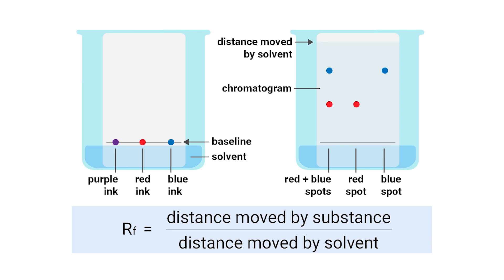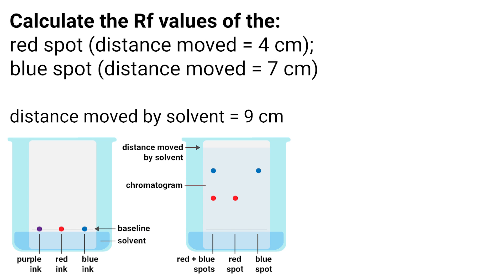You need to be able to calculate an Rf value of any spot on a chromatogram. The way that we calculate an Rf value is by taking the distance that a spot has moved and dividing it by the distance that the solvent moved in our experiment. This number will always be less than one because it's a ratio between how far something has moved versus how far the solvent has moved. Why not have a go at calculating the Rf values for the spots on screen now? Pause this video to work out the answer.